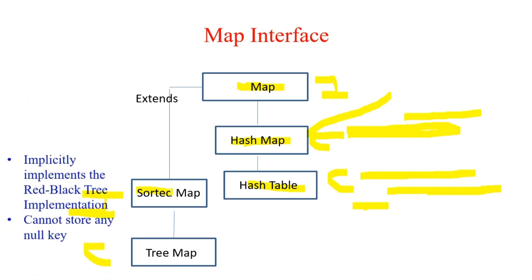And it cannot store any null keys, just as the HashTable. So that was all about the Map interfaces and the complete collection hierarchy. You should remember each and every unique thing I've told you in this particular question.